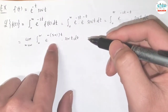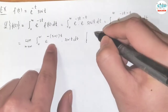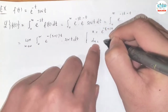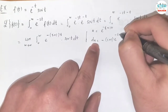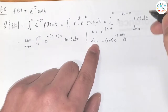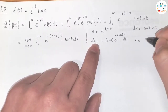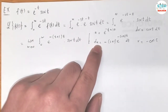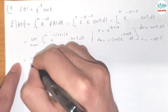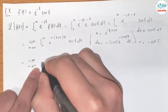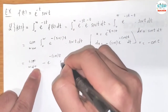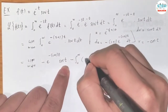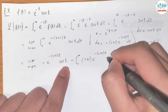To integrate this, we use integration by parts. Let u = e^(-(s+1)t), then du = -(s+1)·e^(-(s+1)t) dt. Let dv = sin(t) dt, then v = -cos(t).